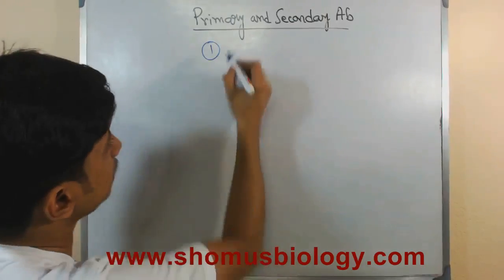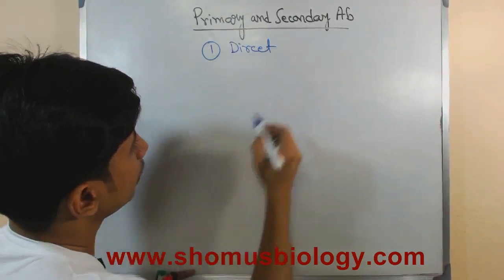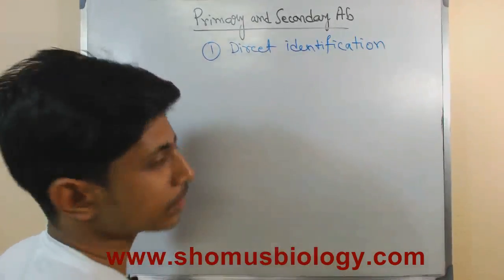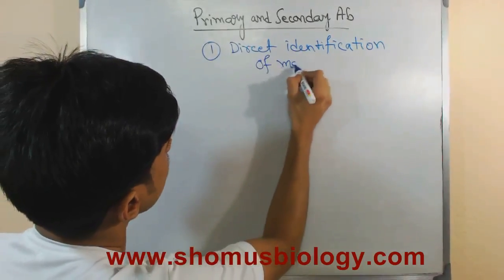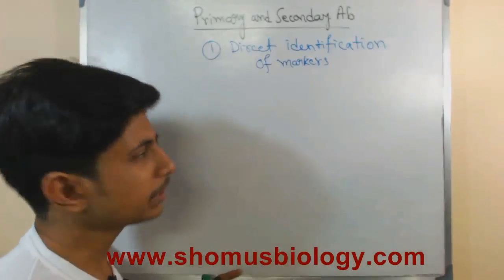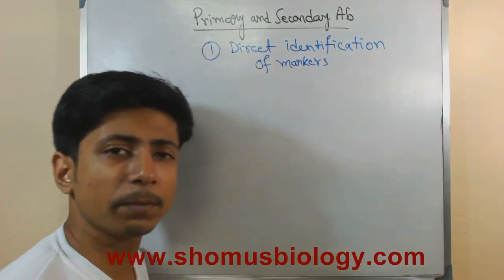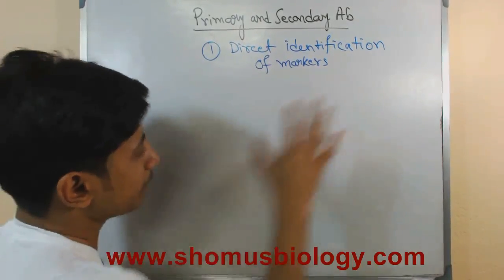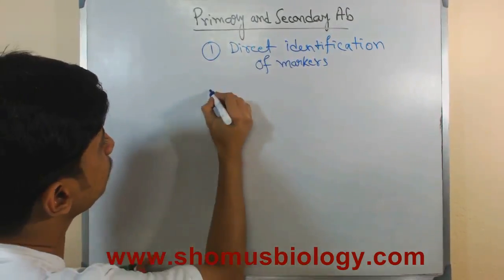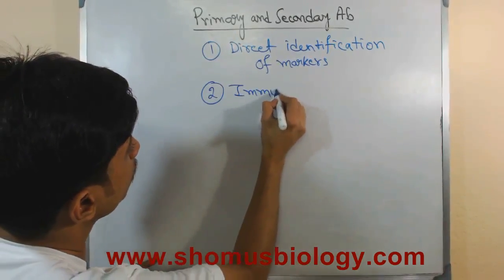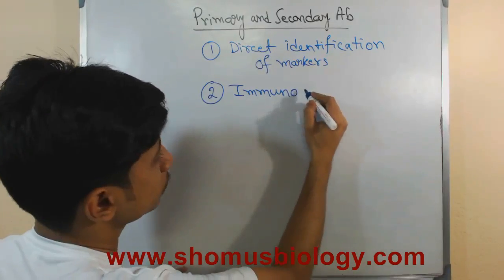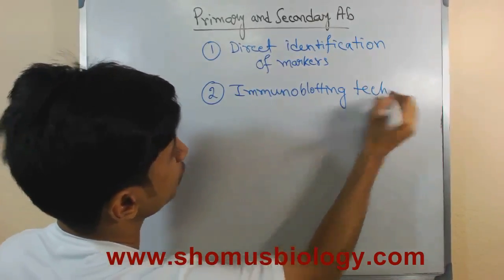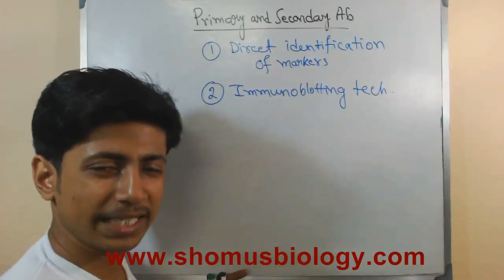Usually there are two different roles of antibody that we use in experiments. Role number one is direct identification — the direct identification of markers. That marker can be a genetic marker, a phenotypic marker, or other structural markers on the surface of the cell. The second purpose is immunohistochemistry or immunotechniques.